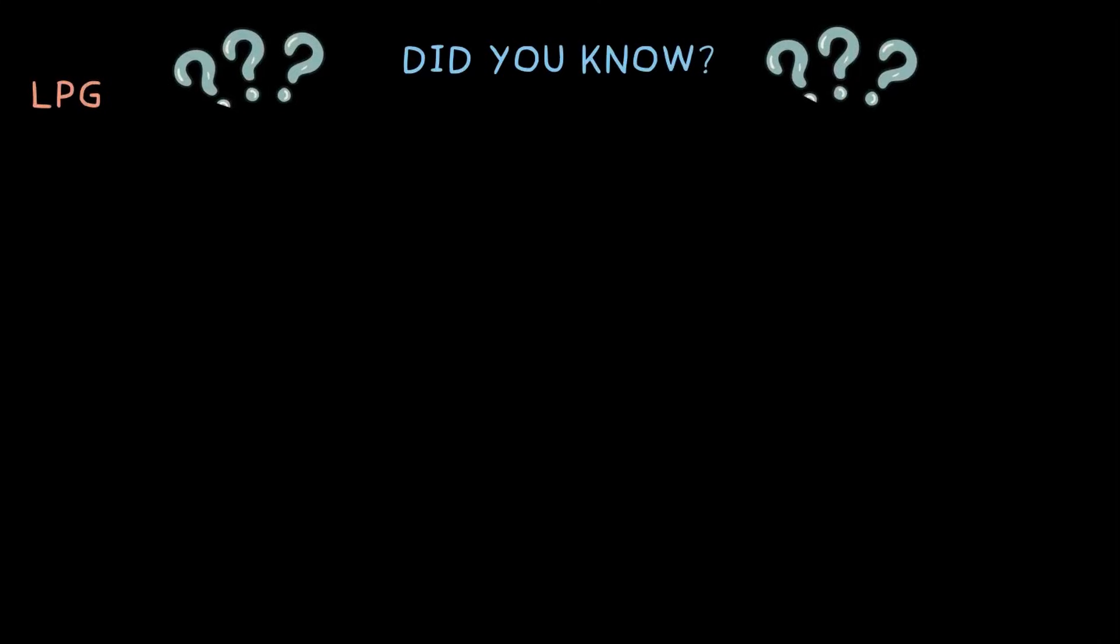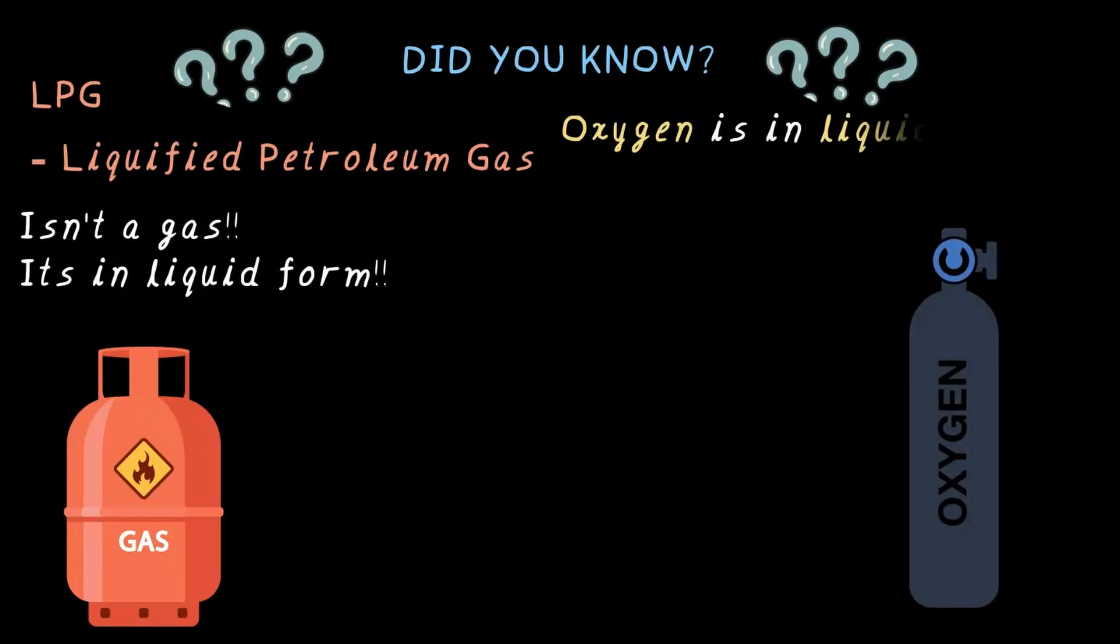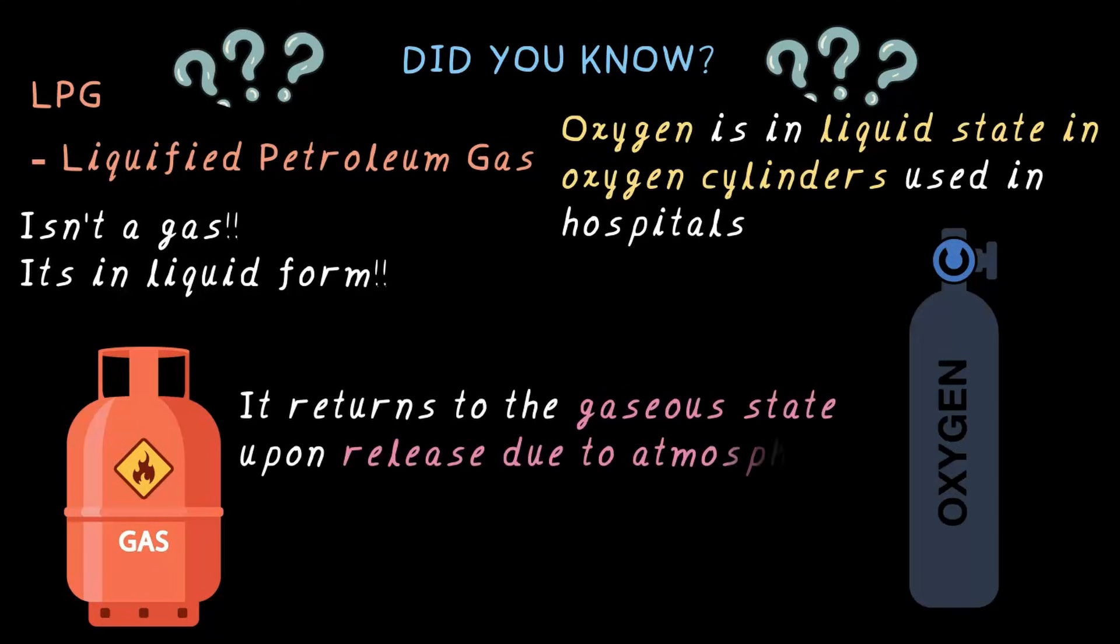Did you know that the LPG, that is liquefied petroleum gas, isn't a gas? It's in liquid form. The same goes for oxygen cylinders that are used in the hospital. It is stored as a liquid. Surprising, right? But the moment you open the valve, it quickly returns into gas because of the atmospheric pressure. That's why you hear a sudden hiss when you turn on the gas stove or open an oxygen cylinder. Pretty cool, right? Yes. This also tells us something very important that gases don't have a fixed shape or volume. They'll expand to fill any space they are in.